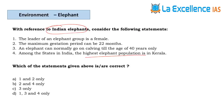The next question is about Indian elephants. Statement about highest elephant population being in Kerala — if you know about Project Elephant, the highest number is in Karnataka, so this is wrong. Narrow to options A and C. The leader of an elephant group is female — the female elephant is called matriarch and leads the herd. Maximum gestation period is 22 months; elephants can normally give birth till age 40. Answer is A.